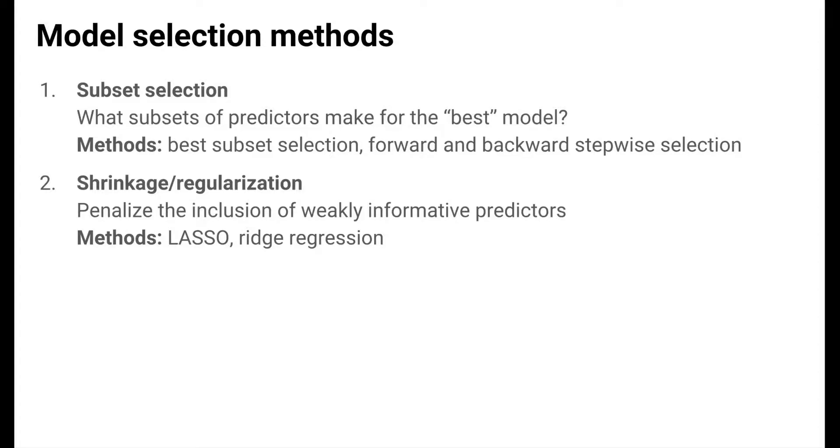The second general area is called shrinkage or regularization, which we'll talk about next. The idea behind these methods is to penalize the inclusion of predictors that are only weakly informative of the response. Methods in this area include LASSO and ridge regression.